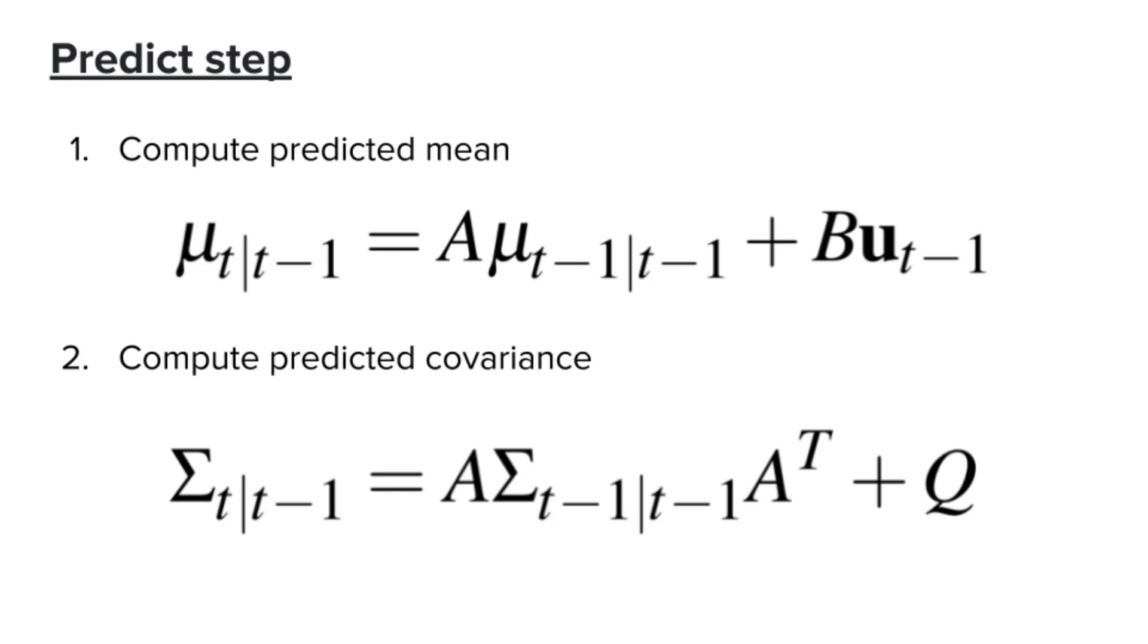Since the model is Gaussian, the prediction of the belief state is also Gaussian. And since Gaussian is parametrized by the mean and covariance, we want to compute the new mean and the new covariance after applying the control signal. Here, the mean signifies our belief of where the robot is after we apply the control signal, while the covariance represents our uncertainty.